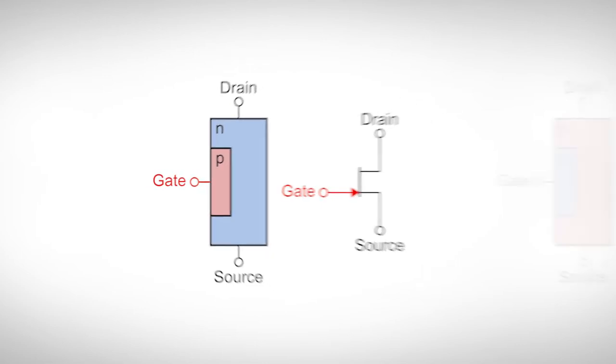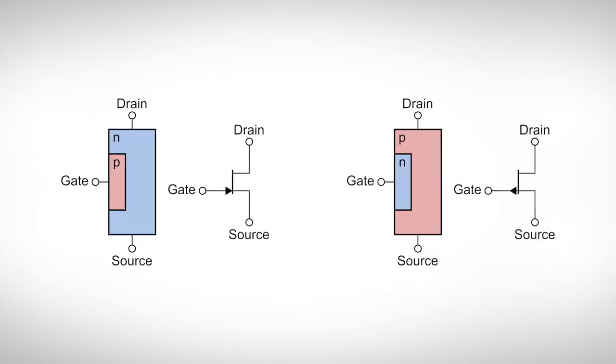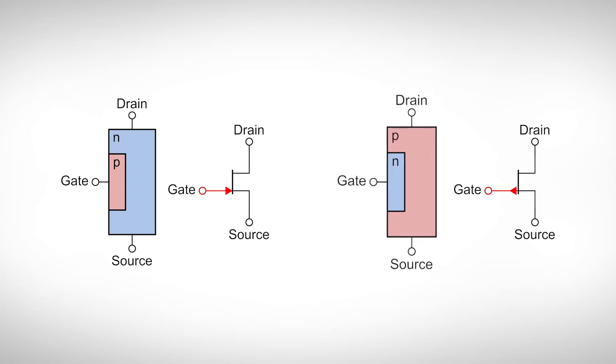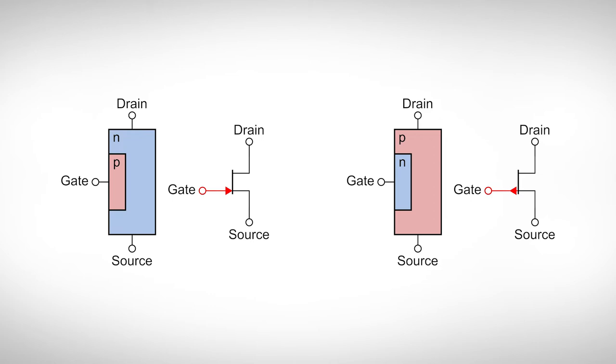Like any electronic component, the JFET has a circuit symbol. The arrow indicates whether it is an N-channel or a P-channel JFET. It is a simplified diode symbol that indicates the direction of the P-N junction.